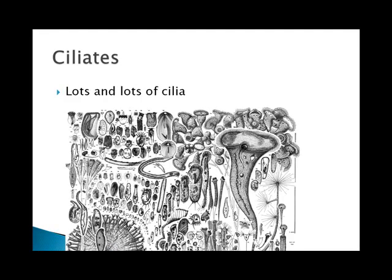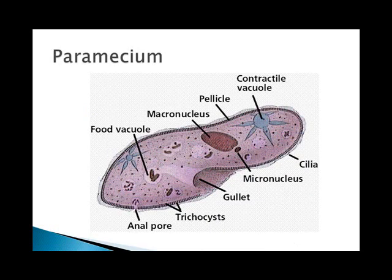Ciliates are another type of protozoan. They have lots of cilia, which are short hair-like structures on the cell membrane, used both to move and to feed. The most common one is paramecium, and you will need to know this diagram. Paramecium have two types of nuclei: the macronucleus and the micronucleus. The micronucleus is basically a sexual nucleus — it gets transferred to another paramecium during sexual reproduction — but they can also reproduce asexually through binary fission.